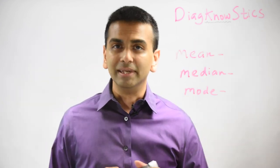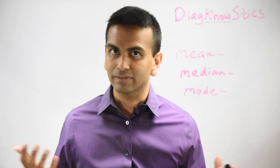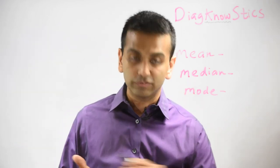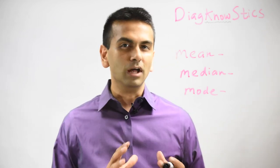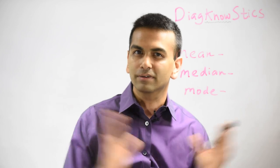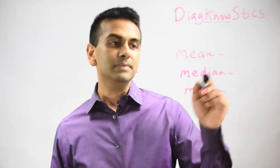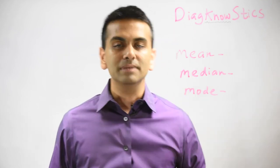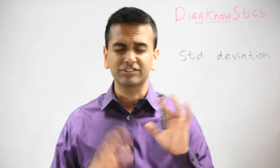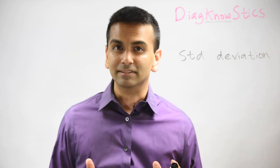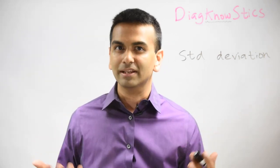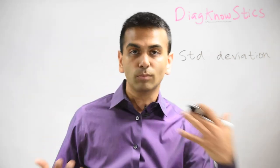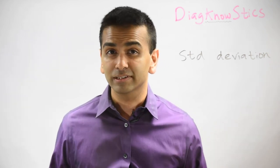Then there's mean, median, and mode. The mean just means the average of a data set. The median is the middle number if you put them all in order, and the mode is just the most frequent observation — they're all trying to measure the center of the data set. The median is not that influenced by outliers, while the mean is a little more influenced. And finally there's standard deviation — you don't really need to know how to calculate it, just know that it measures how spread out a data set is. Even if two data sets have the same average, if one is more spread out it's gonna have a higher standard deviation.